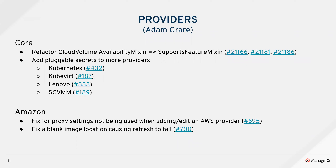This sprint in core, we refactored the cloud volumes to switch from using the old availability mixin into the new supports feature mixin. There's a long list of other areas that we need to do this for, but this came up as we were doing work to add this to the API, so we knocked this one out at the same time. We also continued to add pluggable secrets to more providers — this sprint: Kubernetes, Kubevirt, Lenovo, and SCVMM added pluggable secrets.